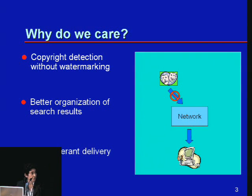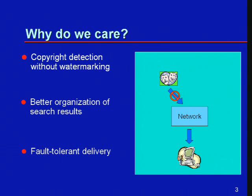The third motivation was fault-tolerant delivery. Suppose the same video content is sitting at multiple sites on the web. If one website that has it is down, can you view the same content from a different website? Organizing the web and figuring out where nearly duplicate videos are sitting is an important problem, and the solution can be very useful — if one site is down, you can stream it from another site.